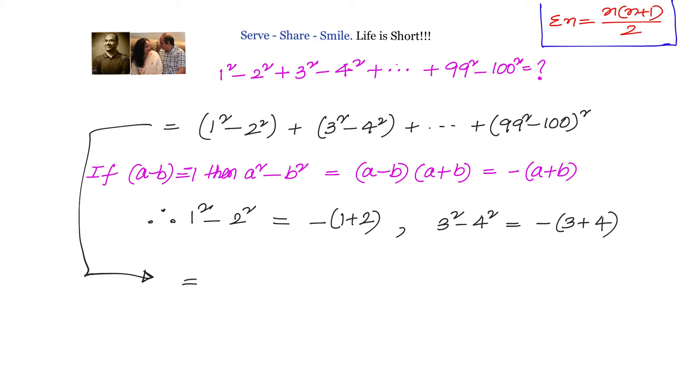minus of 1 plus 2, minus of 3 plus 4, like that up to minus of 99 plus 100. Can we take the minus out? We will have minus of 1 plus 2 plus 3 plus 4, natural number sum up to 100.